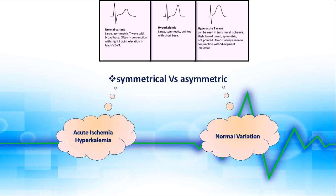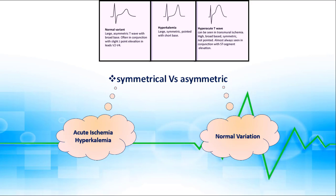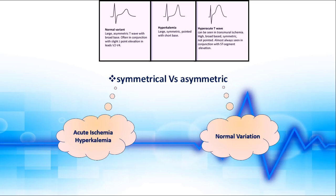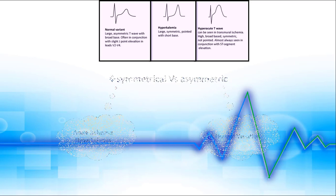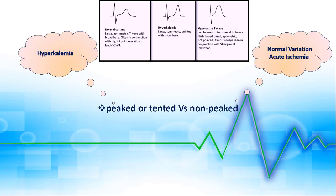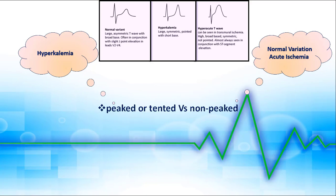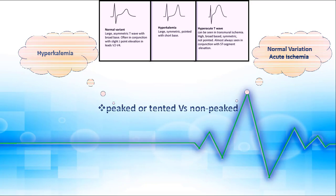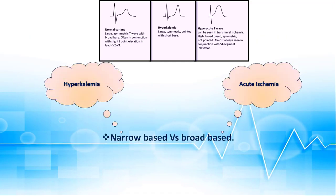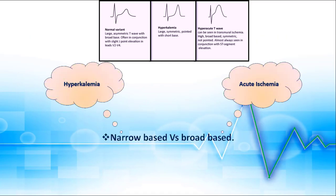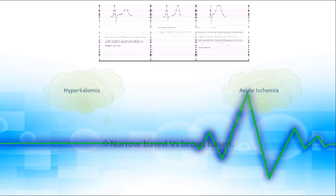First, tall T in acute ischemia and hyperkalemia is often symmetrical, while in normal variations tall T wave is often asymmetric with upstroke slower than downstroke. Second, tall T in hyperkalemia is often peaked or tented, while neither normal variation nor acute ischemia causes peaked T waves. Third, tall T in hyperkalemia is narrow-based, while in acute ischemia it is broad-based.